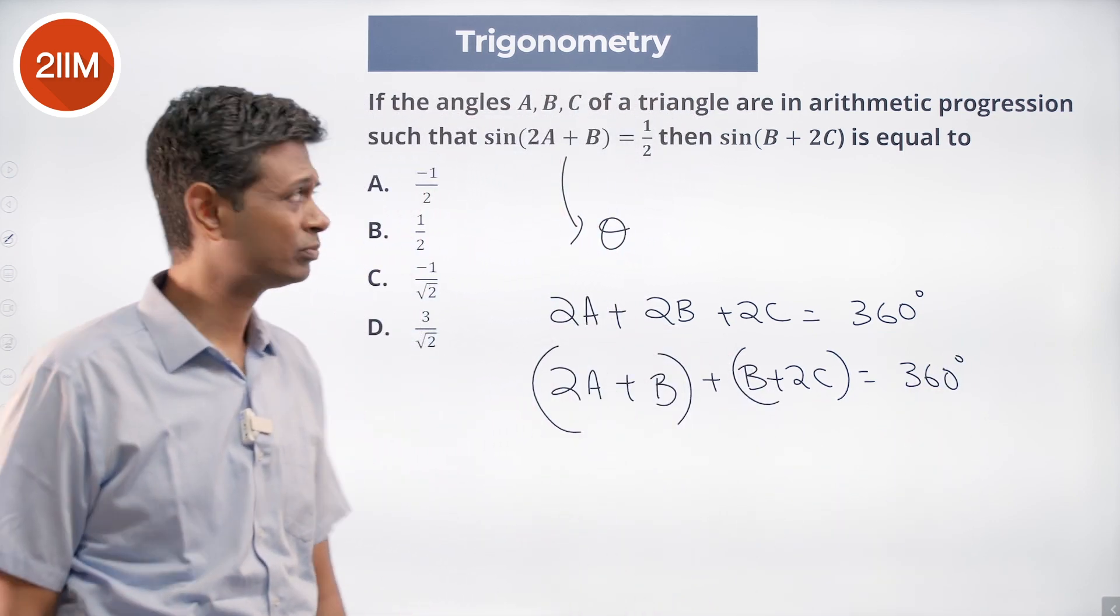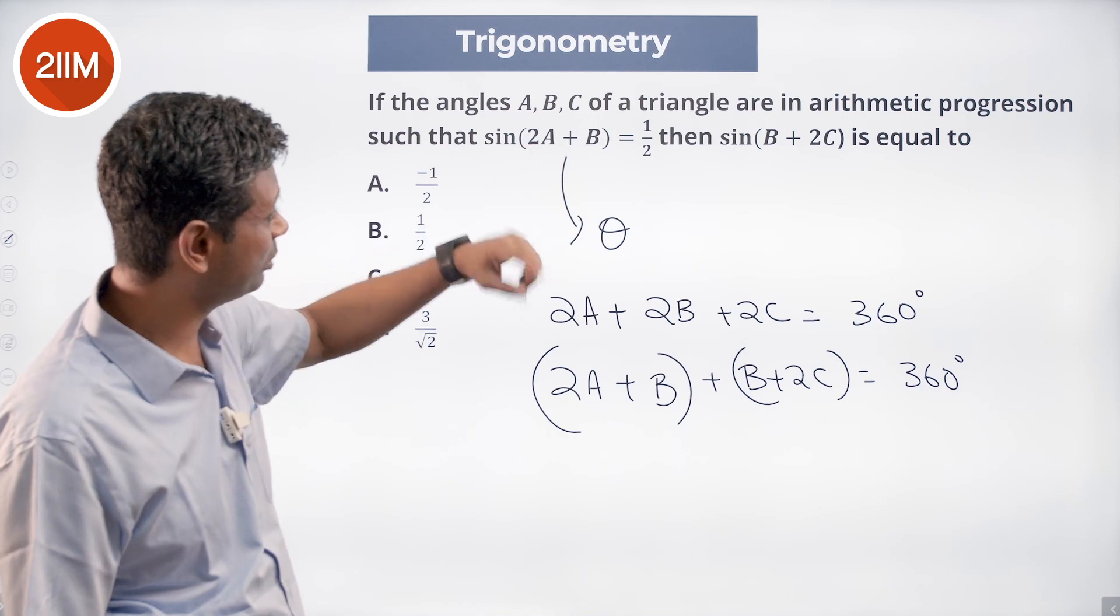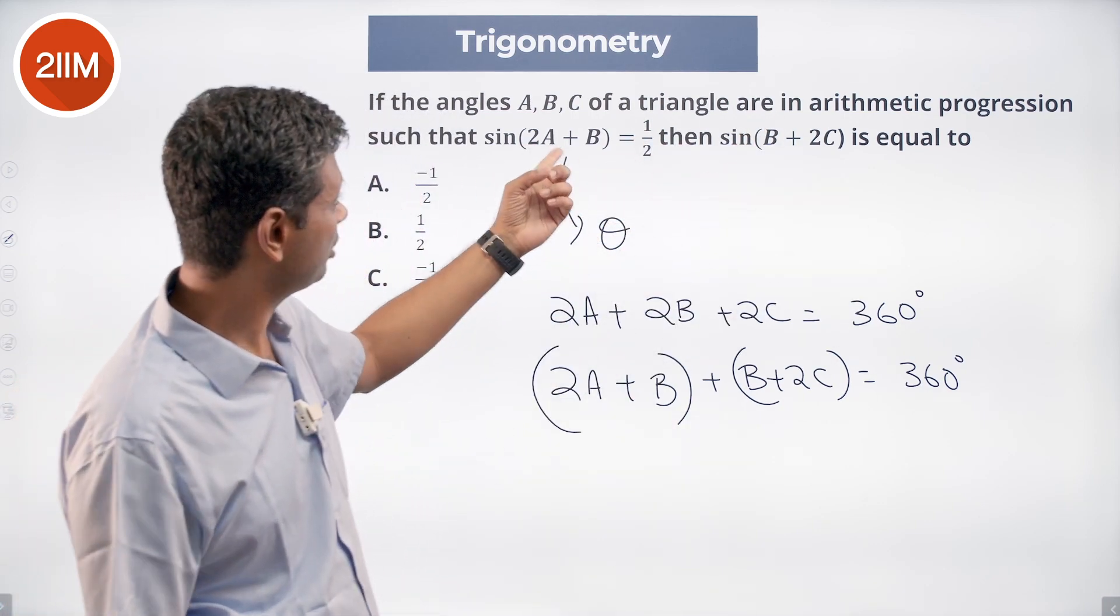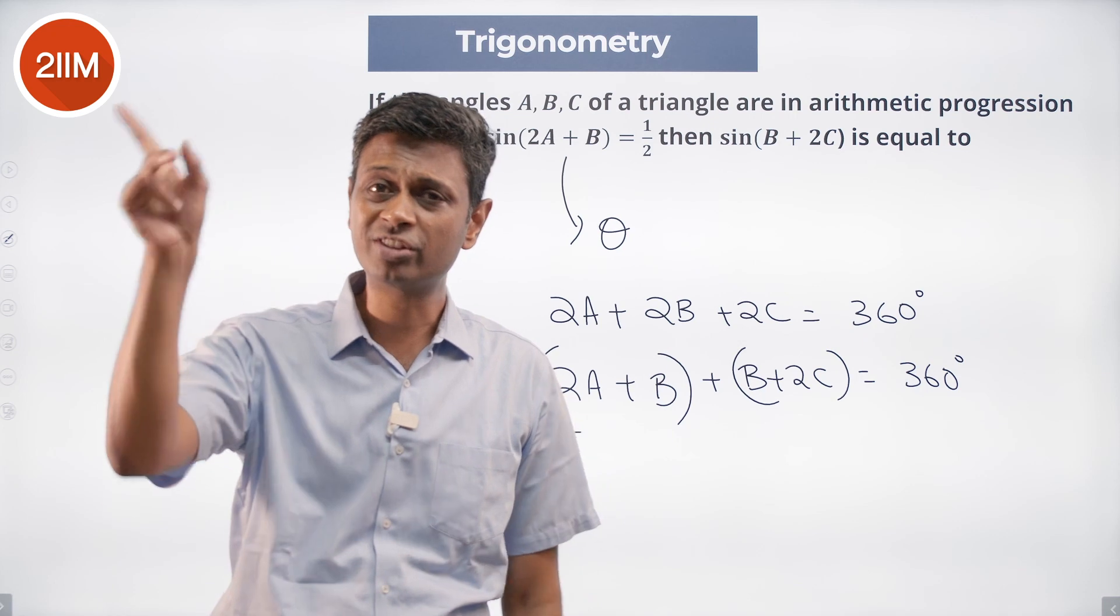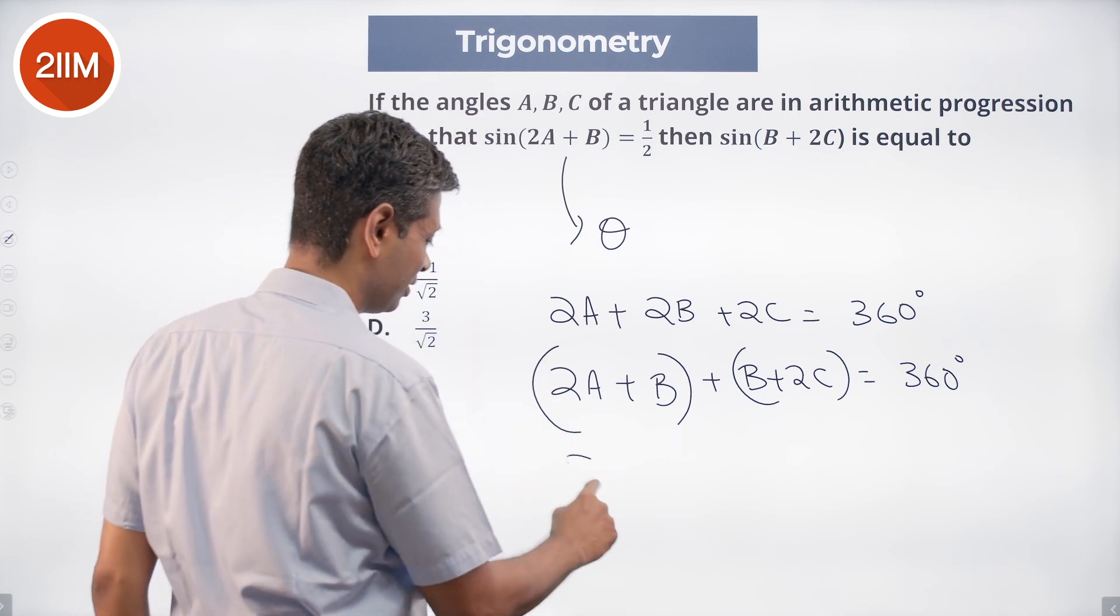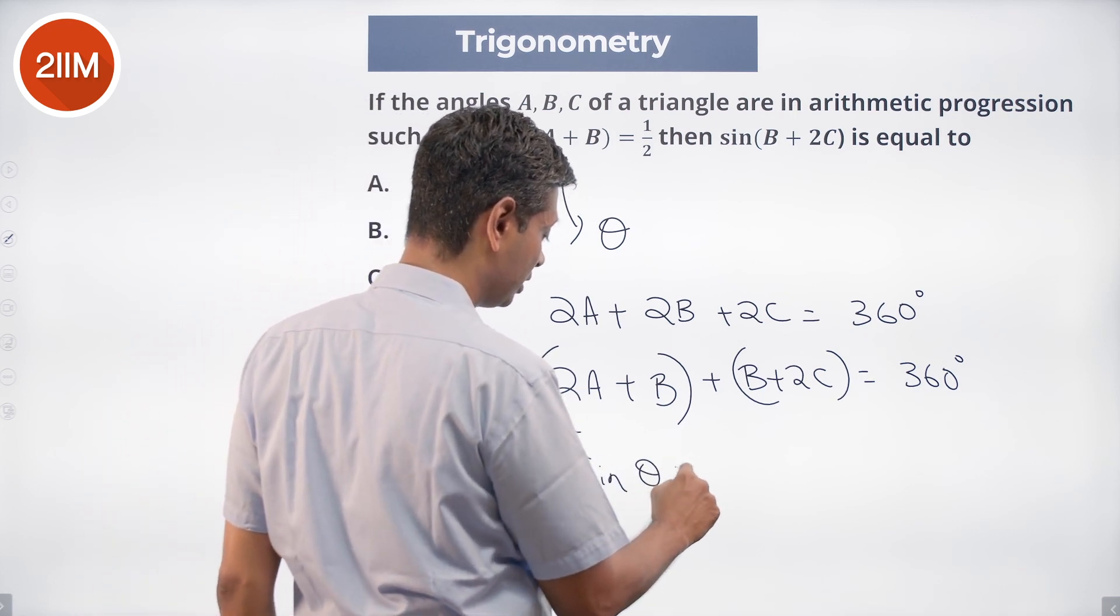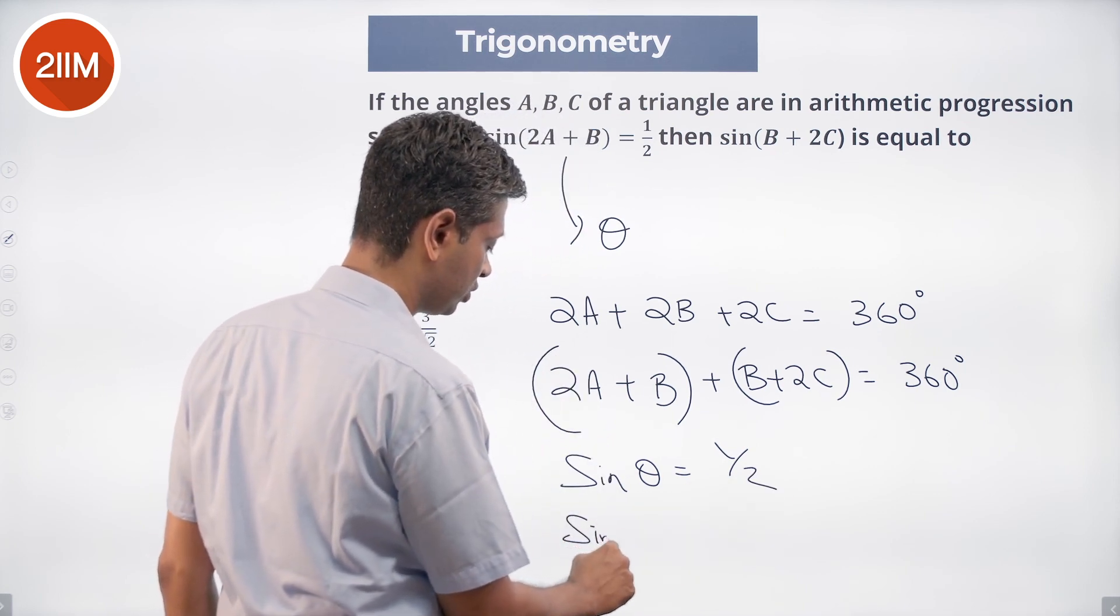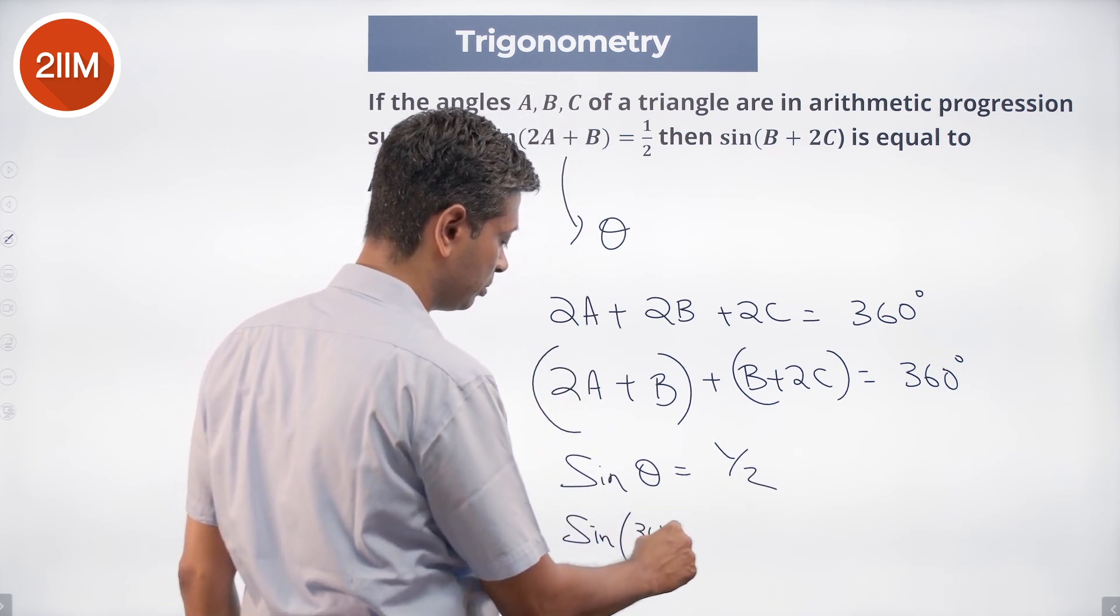So this is 2A plus B and that is B plus 2C. Then 2A plus B and B plus 2C add up to 360. In other words, we are being told sine theta is half, and we are being asked to find sine of 360 minus theta.